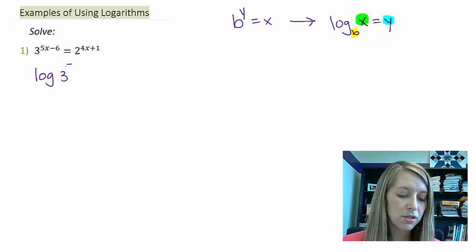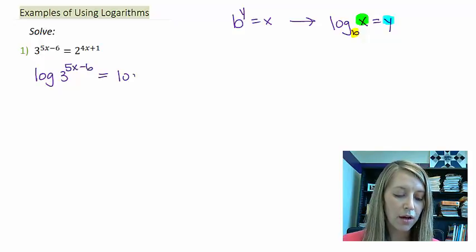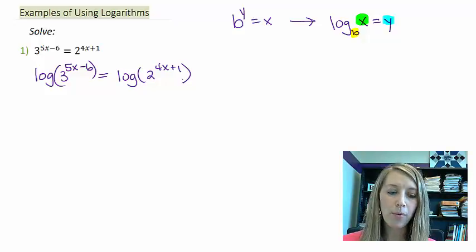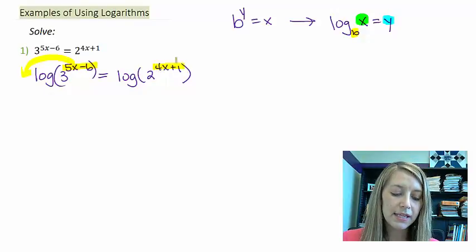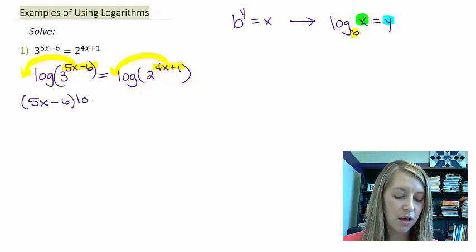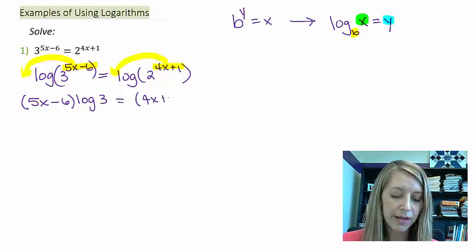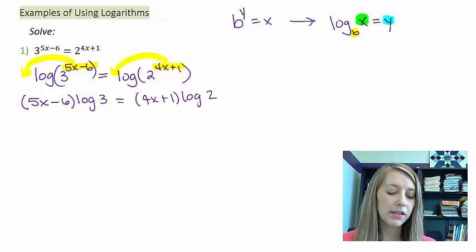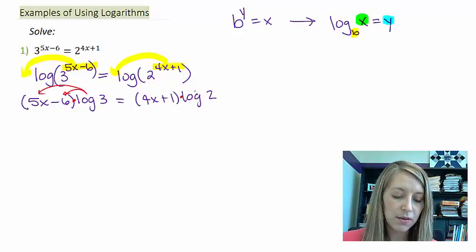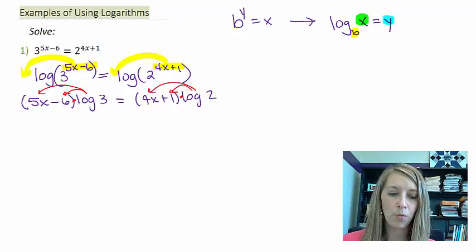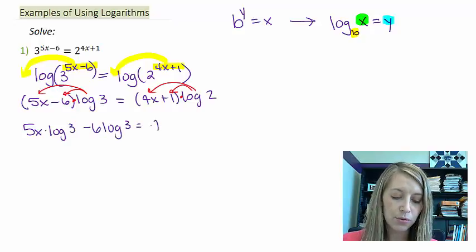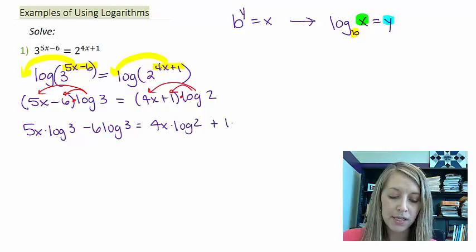I have log of 3 to the 5x minus 6 is equivalent to log of 2 to the 4x plus 1. And now I can use the power property on both sides. So I can take this power and I can bring it down front. So that gives me 5x minus 6 times log of 3 is equal to 4x plus 1 times log of 2. And so what I would want to do now then is I need to distribute this log here on both sides.